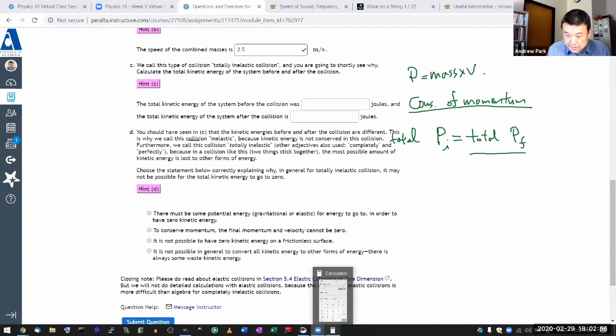All right. Let me write down some of these things as a reminder to myself. m is equal to 0.5 kilograms. And the v initial was equal to 5 meters per second.